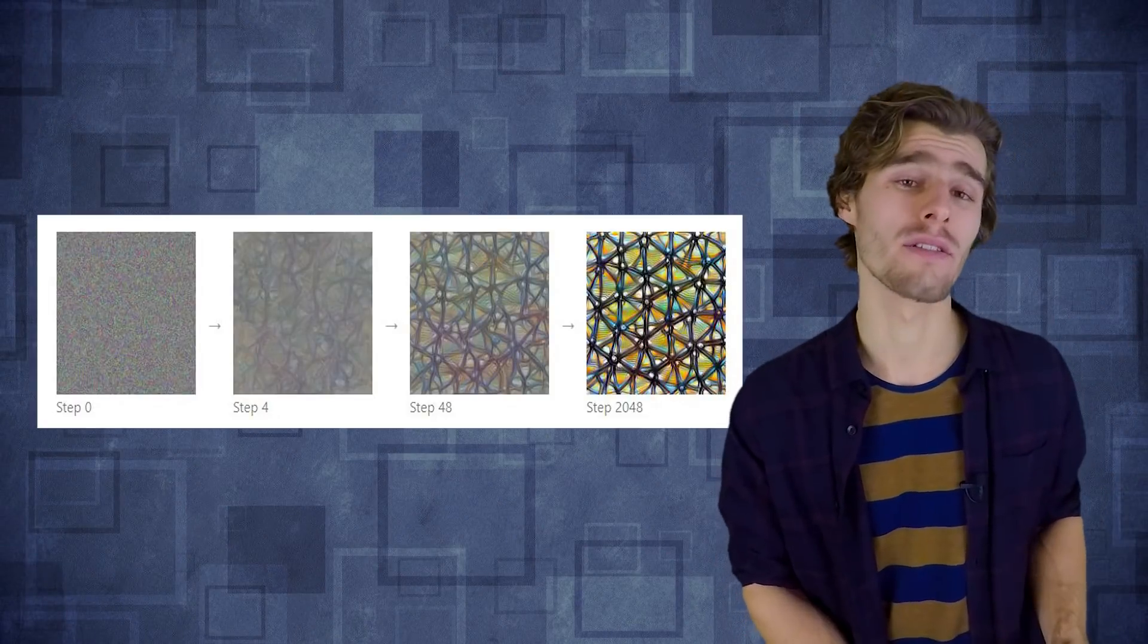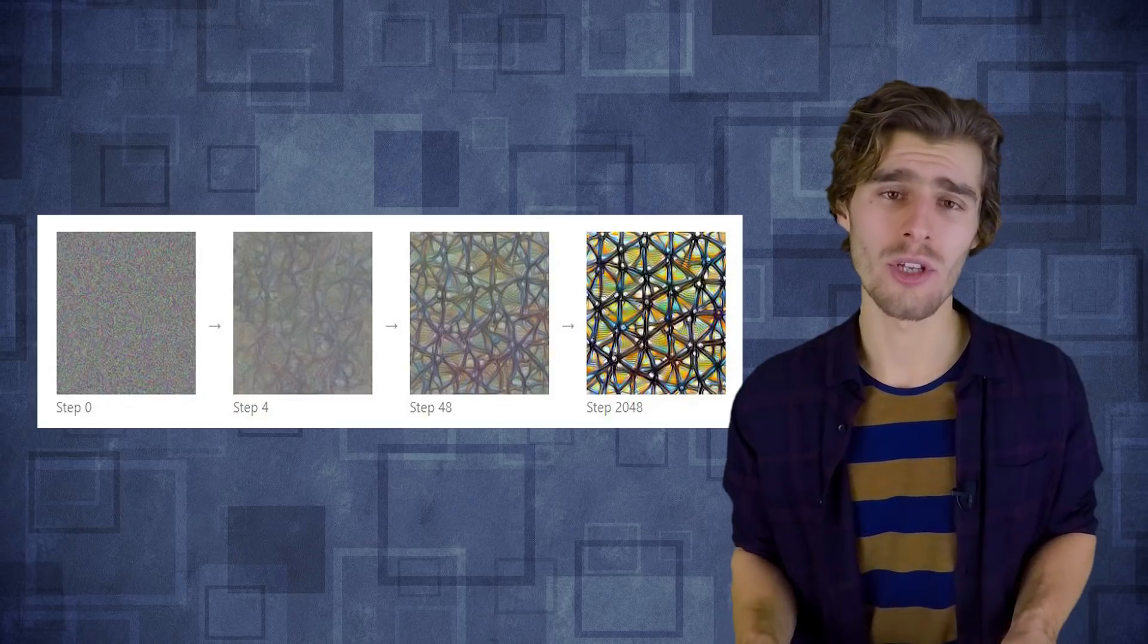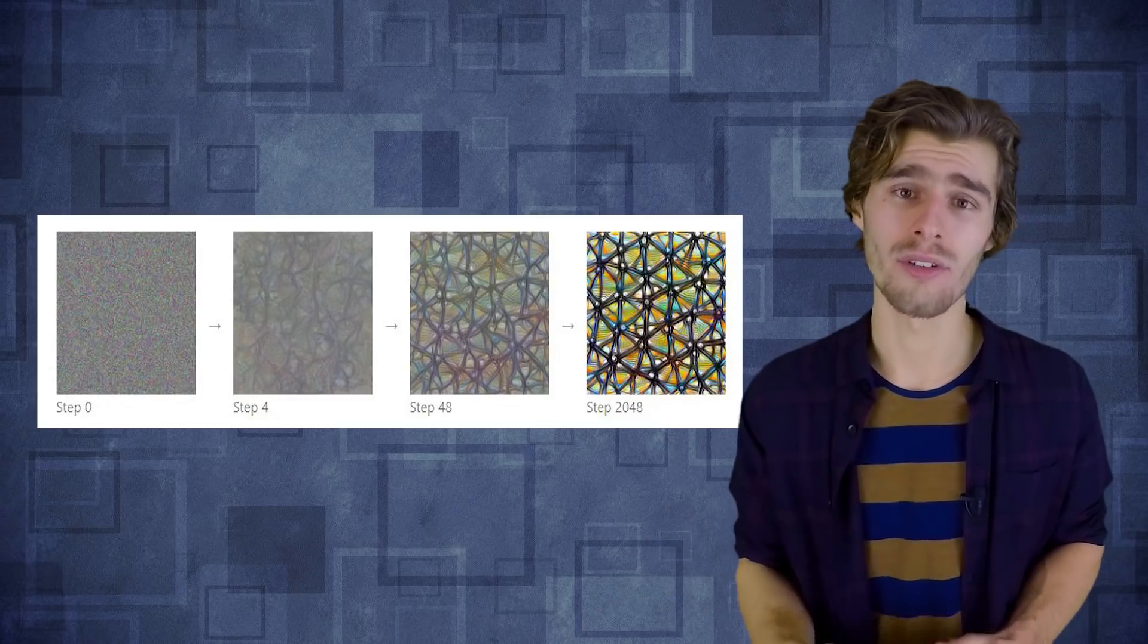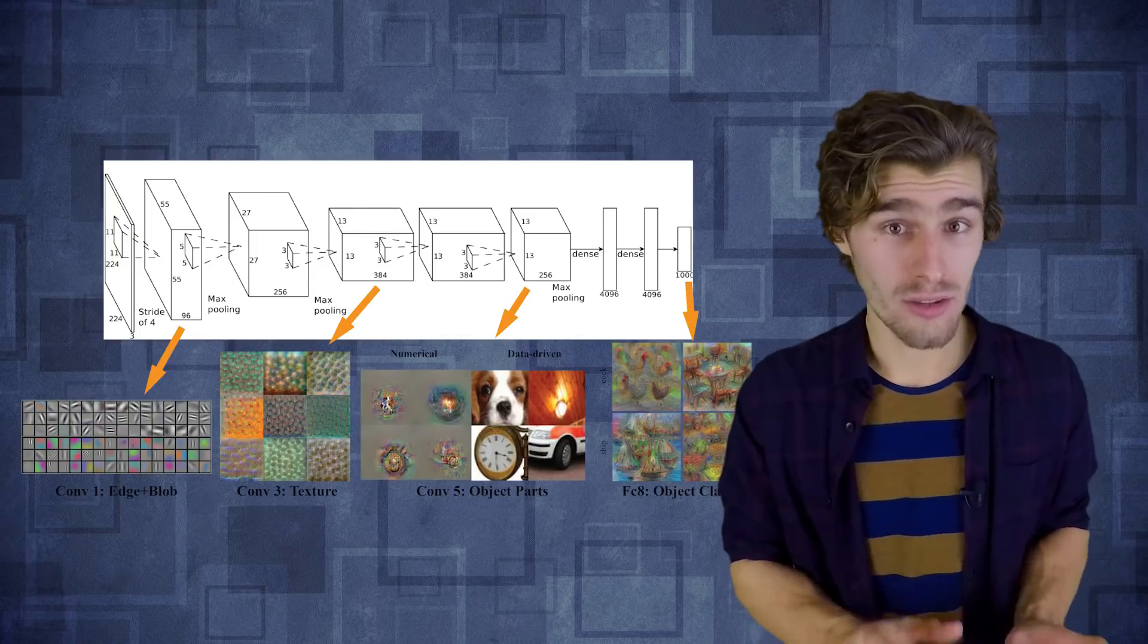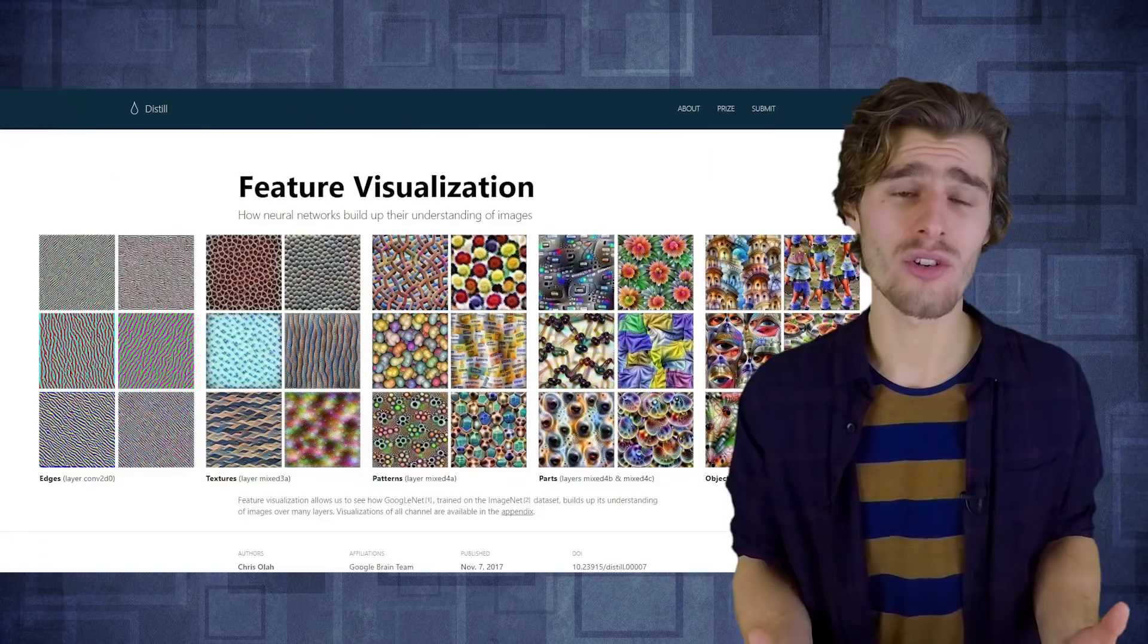So in the previous video we saw that we can use gradient descent on the input pixels of an image to generate images that maximally excite a chosen neuron in a deep neural network. And we can use this technique to visualize features that the network is learning in the images. Now instead of just generating images that are very good at exciting a hidden neuron inside a network, it turns out that you can apply the same procedure and excite a neuron in the output layer of the network.